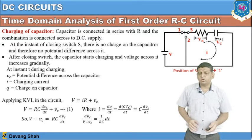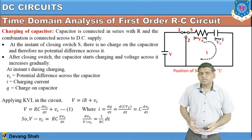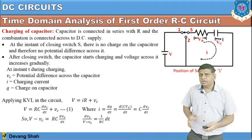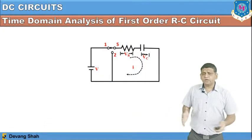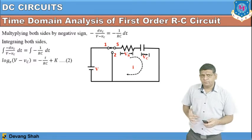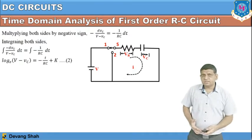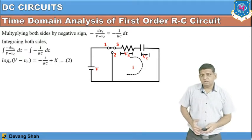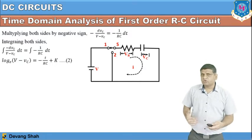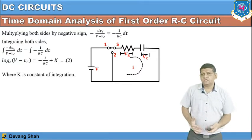Rearranging the equation, we get dV_C / (V - V_C) = (1/RC)·dt. Multiplying both sides by minus one and integrating: the integral of -dV_C/(V - V_C) equals the integral of -(1/RC)·dt. Solving the integration gives: ln(V - V_C) = -T/RC + K, where K is the integration constant.